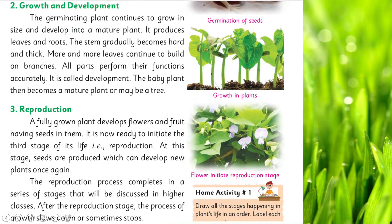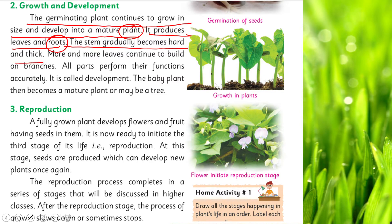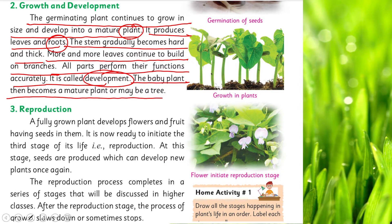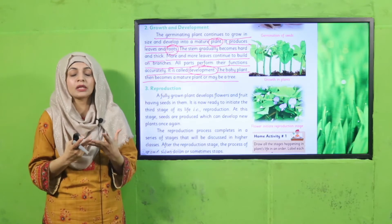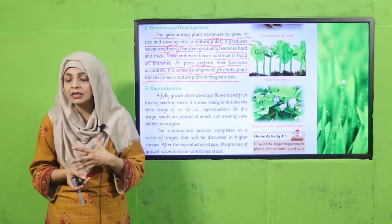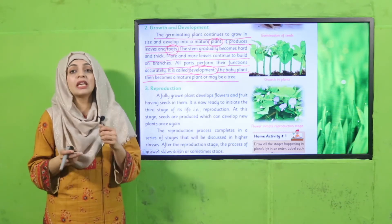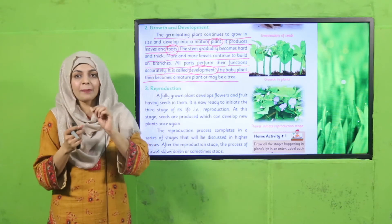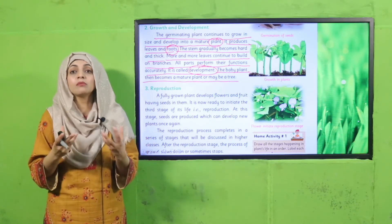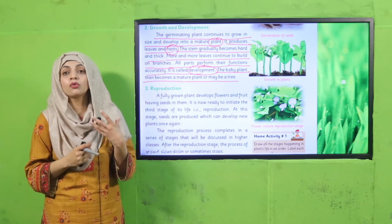The second stage is Growth and Development. The germinating plant continues to grow in size and develops into a mature plant. It produces leaves and roots; the stem gradually becomes hard and thick; more and more leaves continue to build on branches; and all parts perform their functions accurately — this is called development. After germination, the growth process starts: the plant makes its own food in the presence of water, sunlight, and air; new branches and new leaves appear; the stem starts growing and becomes tough, thick, and hard. This process is called growth and development.